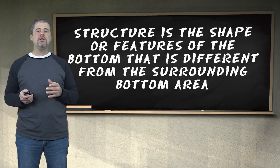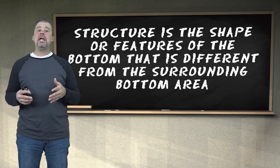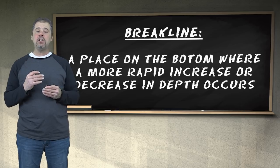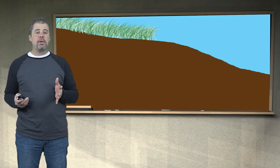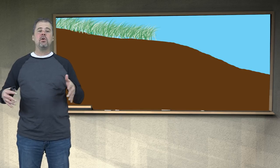As we said in the definition, structure is a shape of the bottom that is different from the surrounding area, and that shape is created by a break line. A break line is a place or a line on the bottom where there is a more rapid increase or decrease in depth. As the word suggests — line — it doesn't happen in one spot, but it's a line. This line may not be straight or continuous; it may curve to the right or left, just as shown with this river channel. A weed line is also a break line. It's the break line that shows us structure.